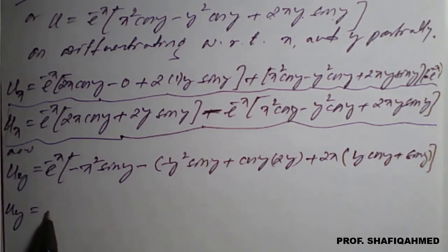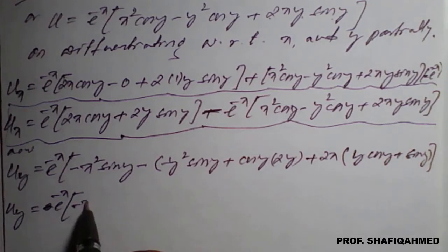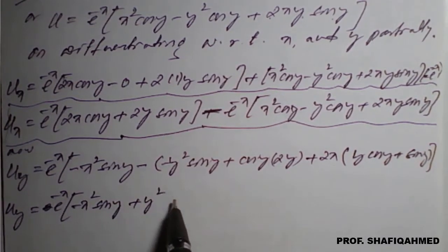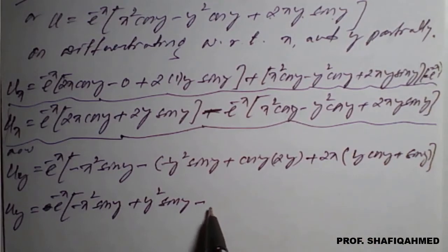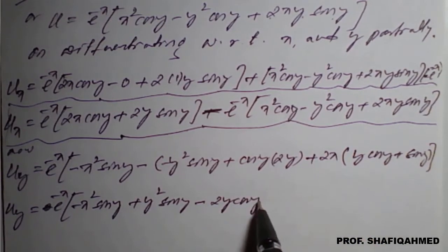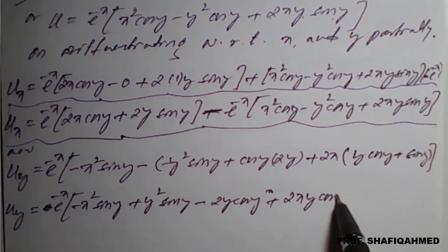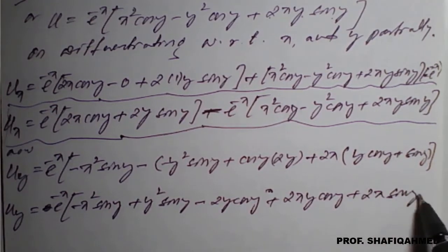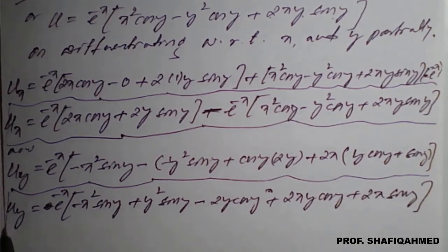So u_y = e^(−x) · [−x² sin y − (−y² sin y + 2y cos y) + 2x(y cos y + sin y)], which simplifies to e^(−x)[−x² sin y + y² sin y − 2y cos y + 2xy cos y + 2x sin y]. These are our partial derivatives u_x and u_y.